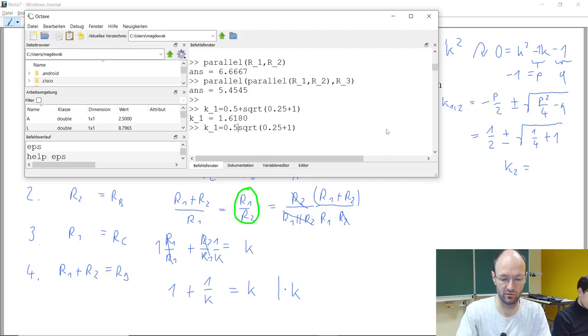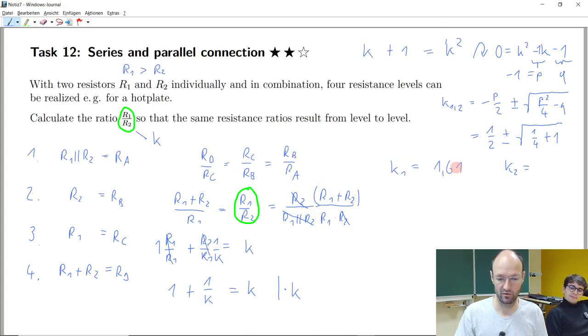And the other solution K2 is the same formula, but just with a minus. And then you get some negative ratio. So we get 1.618 and here we get minus 0.618.